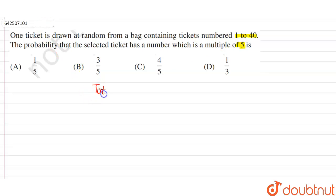So firstly, total possible outcomes are 40. From 1 to 40 means total 40.